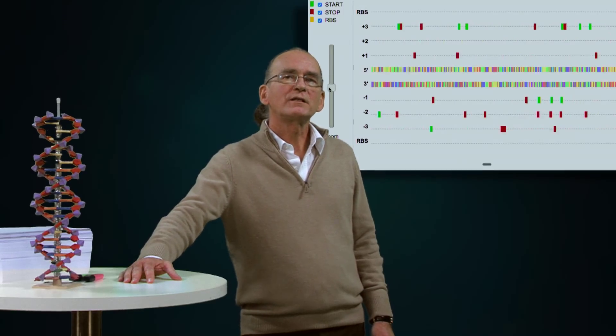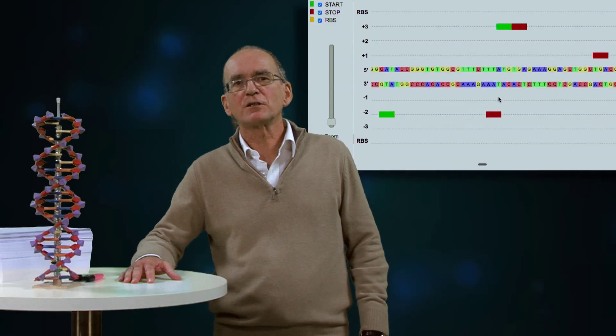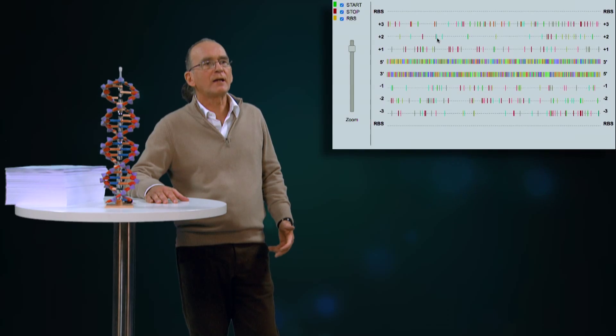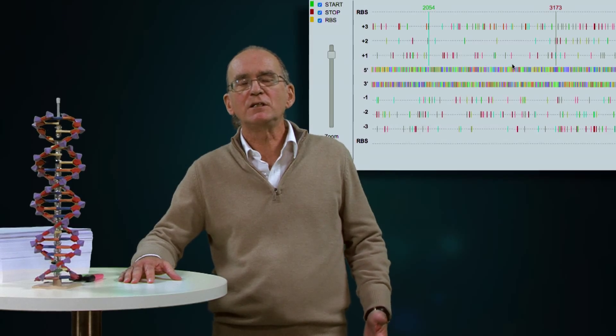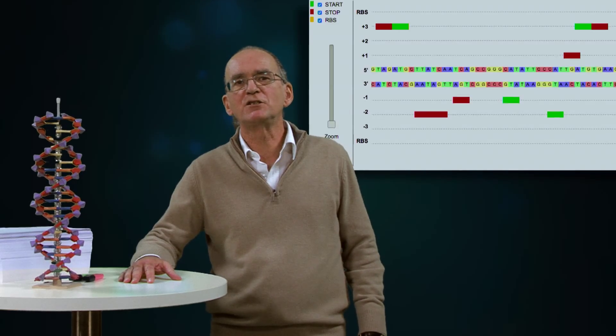In this course, we will discover how computer science supports the interpretation of these genomic texts. Running the adequate programs, a computer can identify and locate thousands of genes of bacterial genomes and also predict the function of these genes.